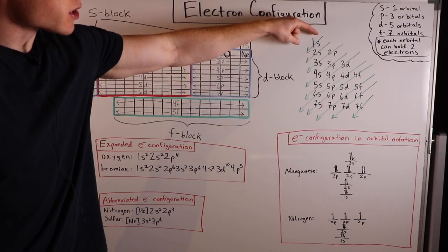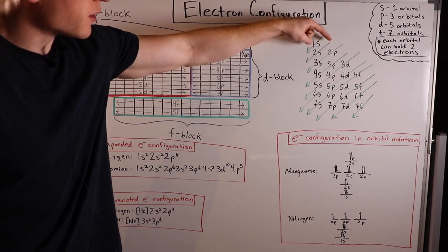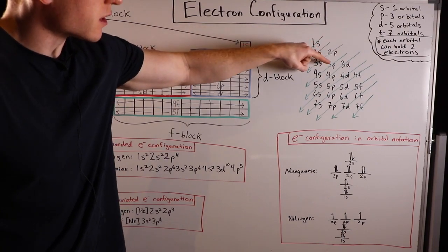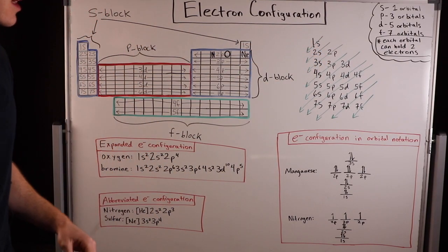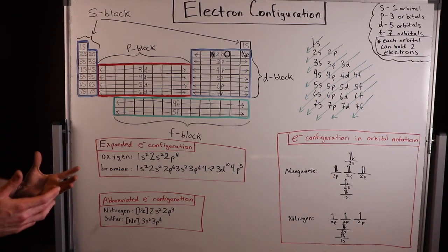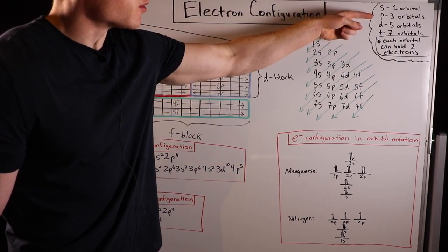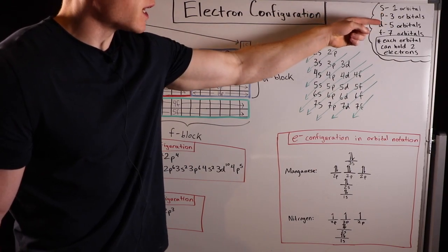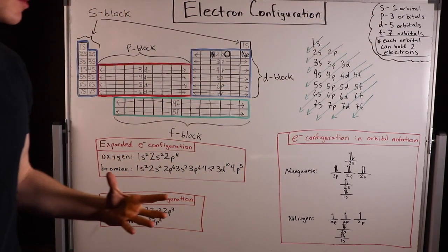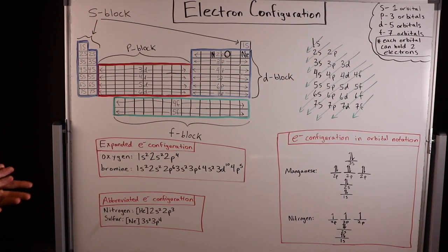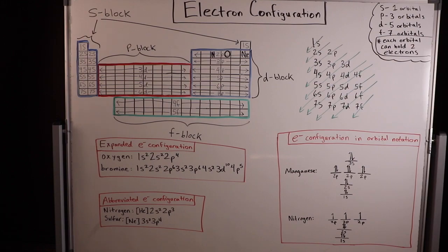First electrons fill the 1s orbital, then 2s, then 2p, then 3s, then 3p, and 4s. The s level contains 1 orbital, the p level contains 3 orbitals, the d level contains 5, and the f level contains 7 orbitals. Each orbital can hold 2 electrons. Think of an orbital as basically a container that can hold 2 electrons.